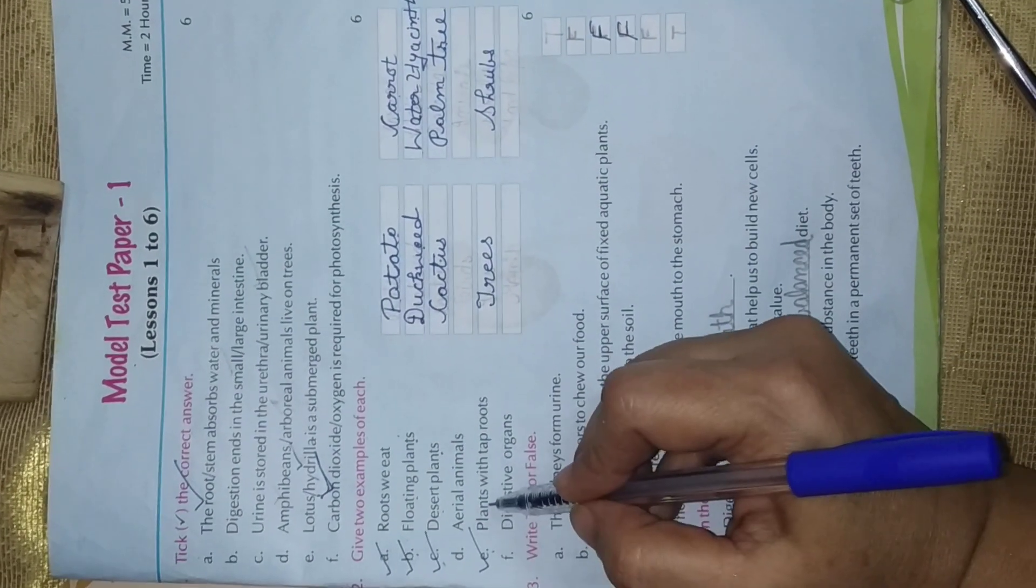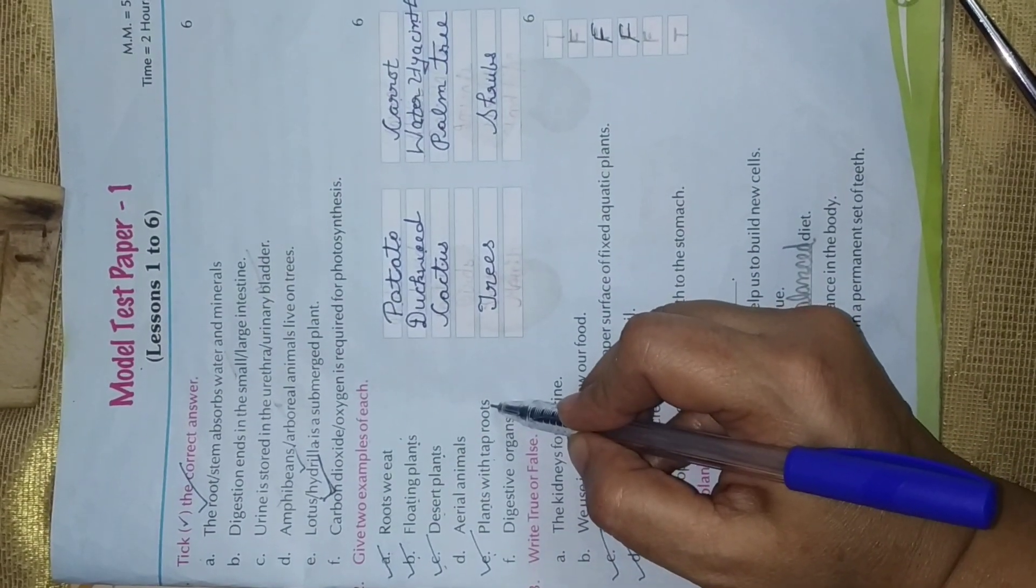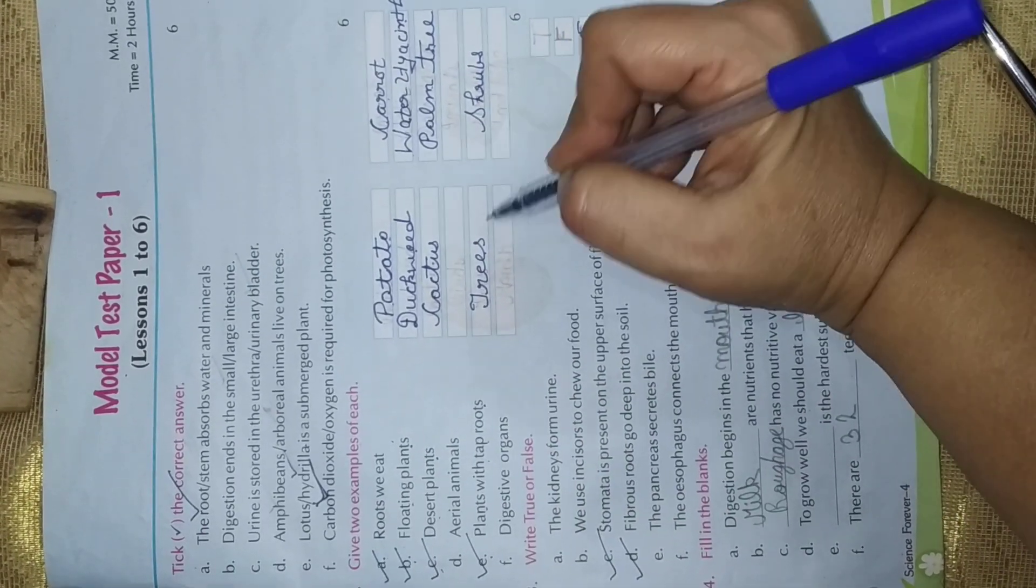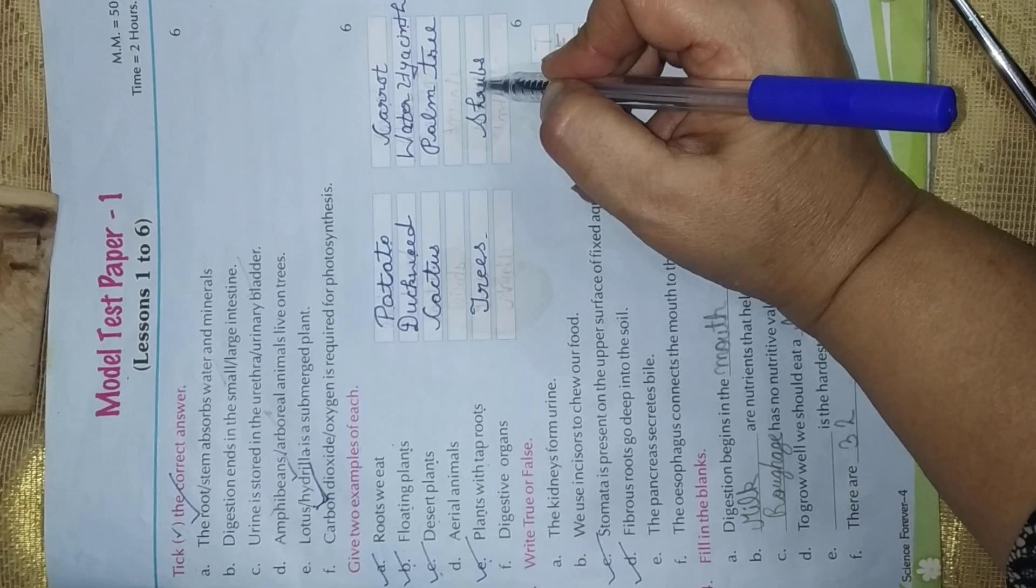E. Plants with tap roots. Which plants have tap roots? Trees, shrubs. Trees and shrubs, they have tap roots.